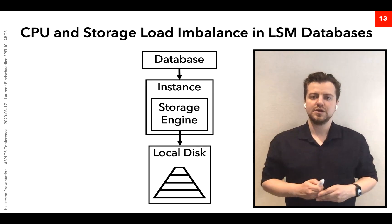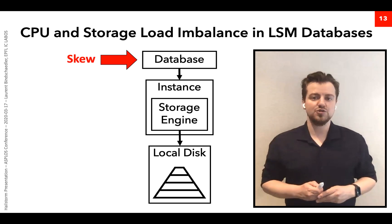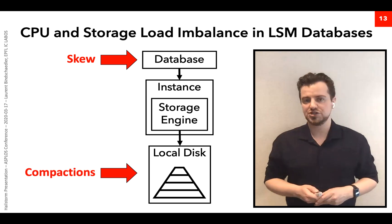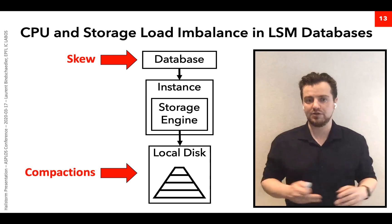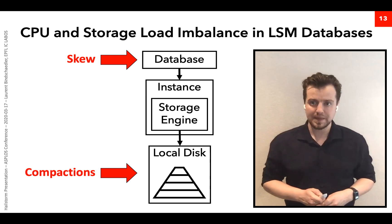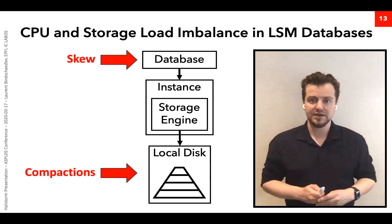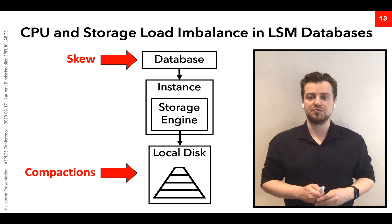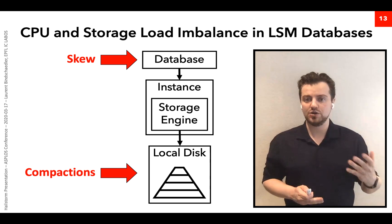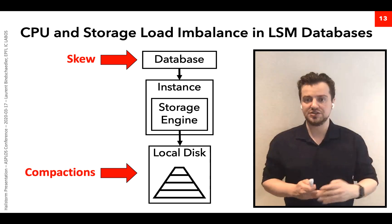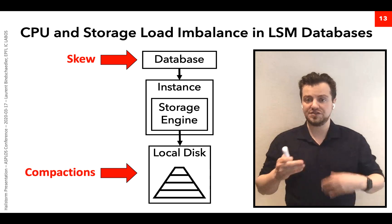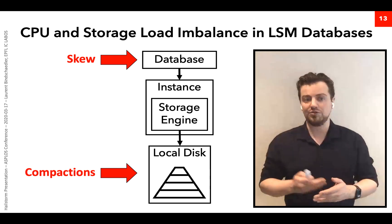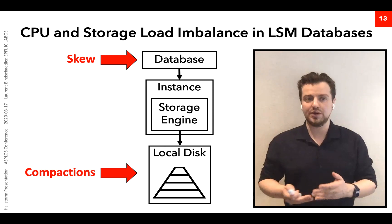In summary, there is skew at the database layer and skew at the disk layer caused by background tasks such as compactions. When those two are combined, it can lead to very significant performance degradation — one node has more data to store, must run more compactions, and gets into a vicious circle where performance degrades more and more.